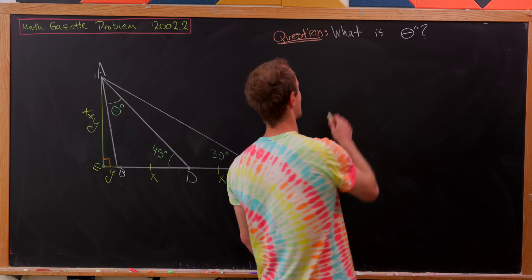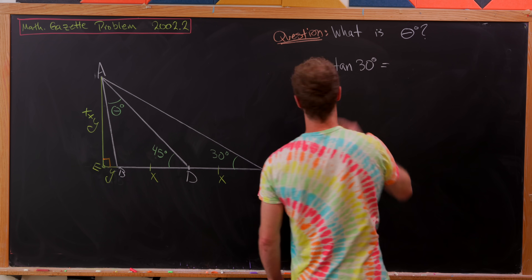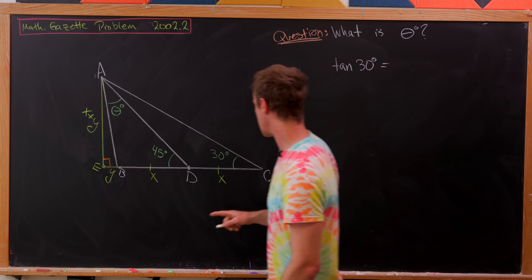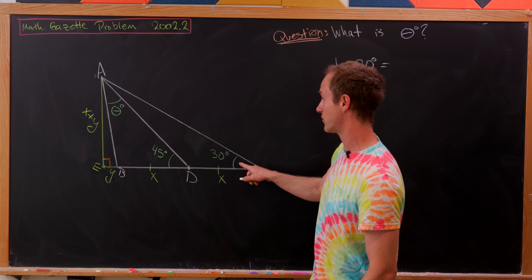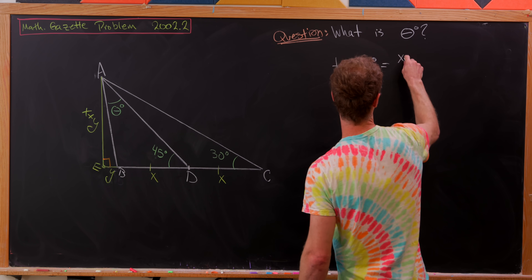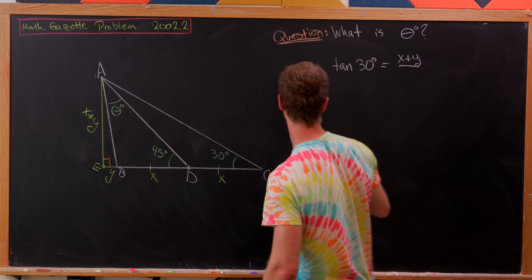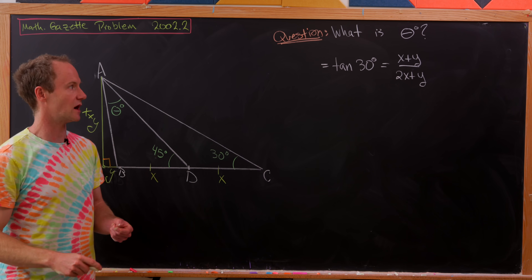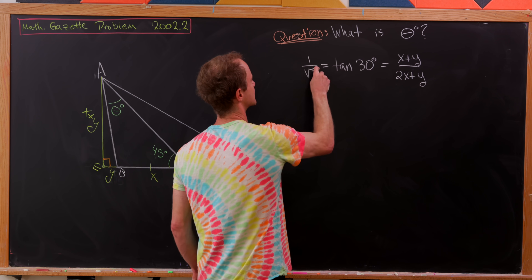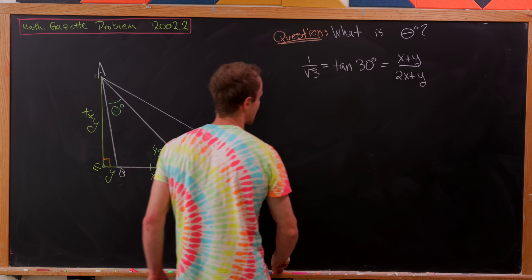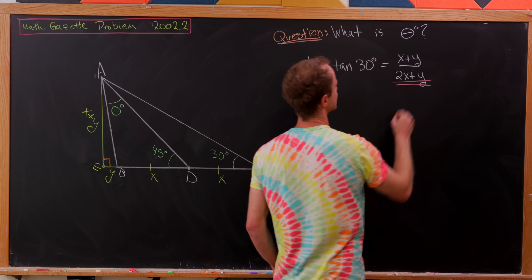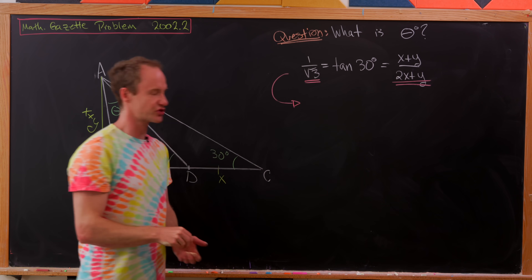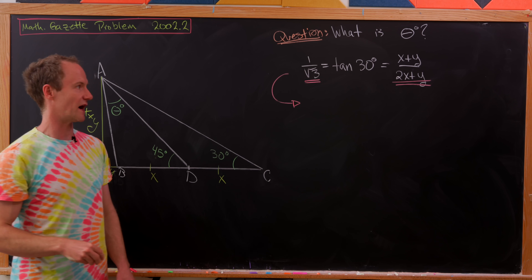Now let's do some trigonometry. Looking at the large right triangle AEC, the tangent of 30 degrees equals opposite over adjacent, which is (x + y) over (x + x + y), in other words (x + y) over (2x + y). The tangent of 30 degrees is the well-known value 1 over root 3, giving us the equation: 1/√3 = (x + y)/(2x + y). We want to solve for x/y.